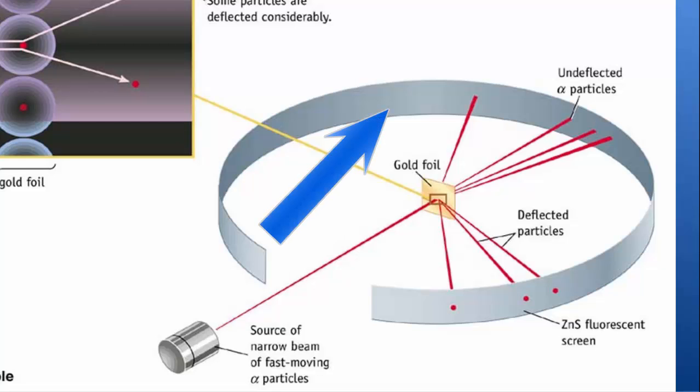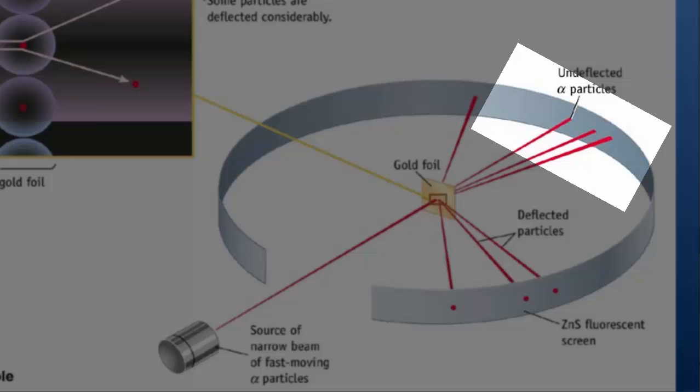He put a screen around this experiment, around the gold foil, so that he could watch and see where the particles would hit. He can't see alpha particles, so he needs to be able to see where they strike, where they end up. And most of the alpha particles went right through the gold foil and struck the screen immediately on the opposite side.